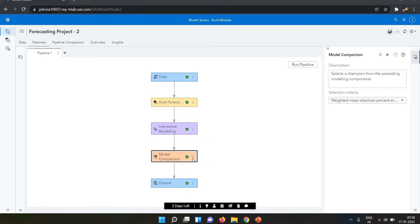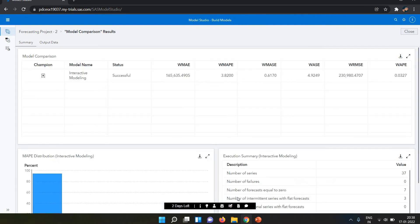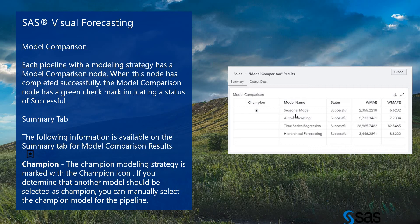I click on Result. In this result we have a Summary tab and Output Data tab. In the Summary tab, first it shows the champion model. Right now we have only one model done, but if we had done multiple ones — like seasonal model, auto forecasting, time series regression, hierarchical forecasting — they would all be listed here, and then it would show the champion.